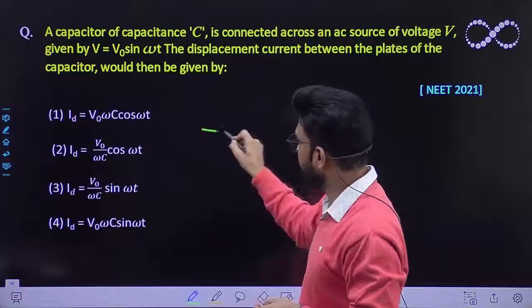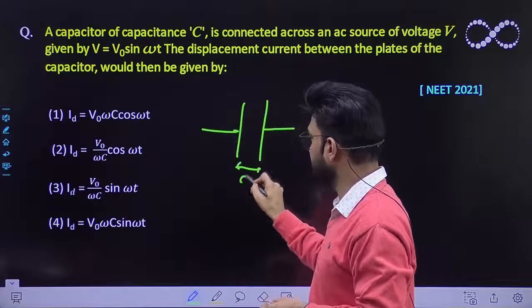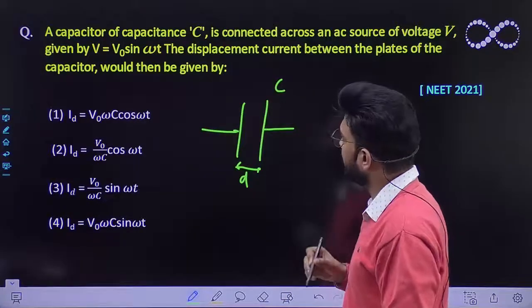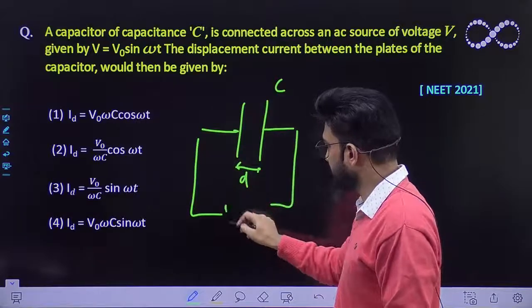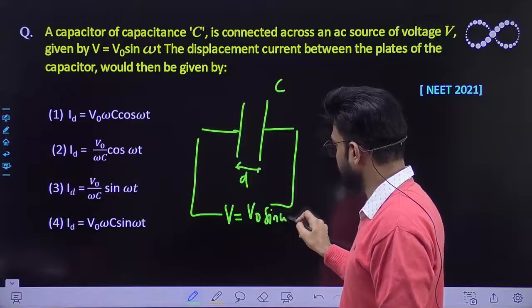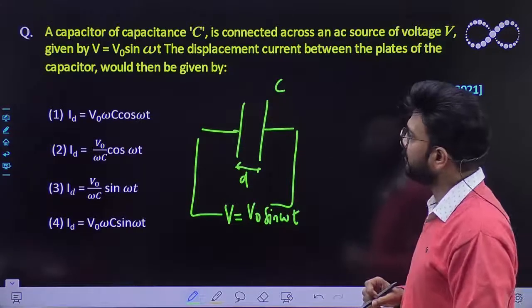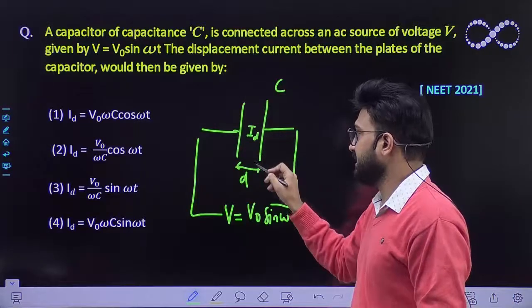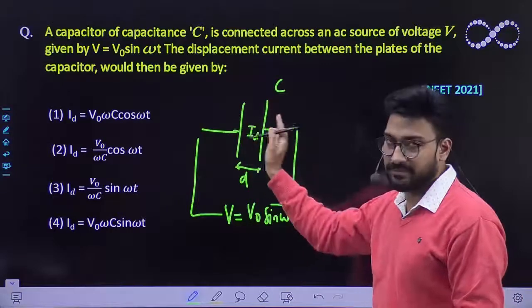So that means you have been given a parallel plate capacitor just like this, and the distance between them is D and its capacitance is C. And the potential difference across it varies with the relationship V = V0 sin ωt. So you need to find out what is the displacement current over here, the displacement current ID which is flowing within these parallel plates capacitor.